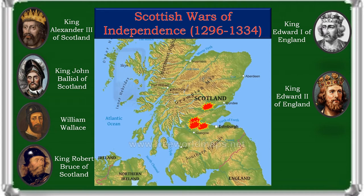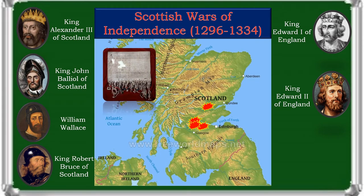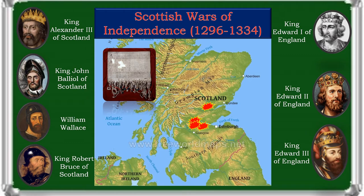In 1320, the Declaration of Arbroath helped convince the Pope to nullify the various acts of submission by Scottish kings to English ones, so that Scotland's sovereignty could be recognized by the major European dynasties. The declaration has also been seen as one of the most important documents in the development of a Scottish national identity. In 1326, what may have been the first full Parliament of Scotland met. In 1328, Edward III signed the Treaty of Edinburgh-Northampton, acknowledging Scottish independence under the rule of Robert the Bruce. However, four years after Robert's death in 1329, England once more invaded, starting the Second War of Independence. Despite victories at Duplin Moor and Halidon Hill, in the face of tough Scottish resistance, successive attempts failed.